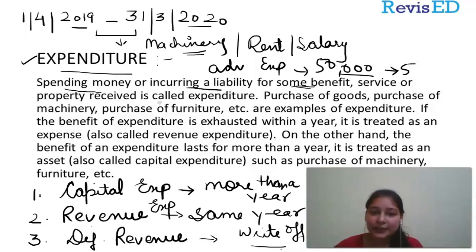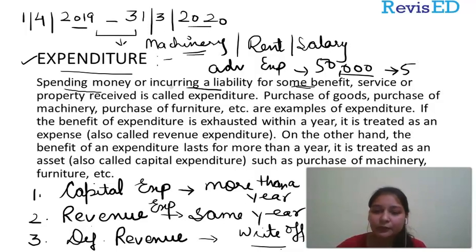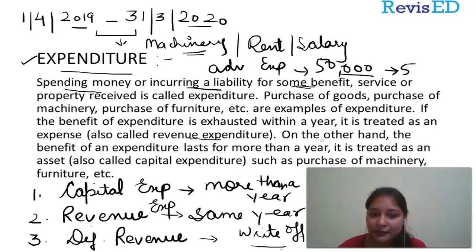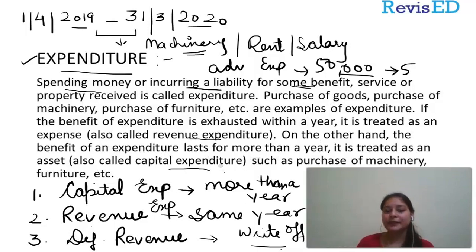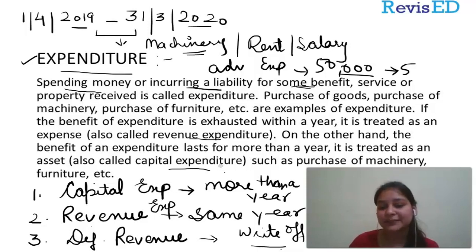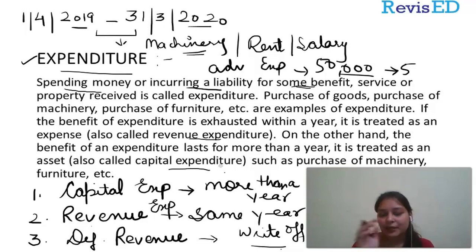Now let's see what we have here. Purchase of goods, purchase of machine, purchase of furniture — all of these are examples of expenditure. If the benefit is exhausted within the year, it is revenue expenditure. If the benefit lasts for more than a year, it is considered as capital expenditure. So, this is all about expenditure.